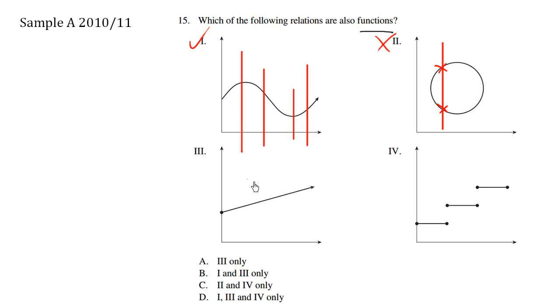So what about choice number three? We always pass the vertical line test. So choice number three is okay as well to be called a function.